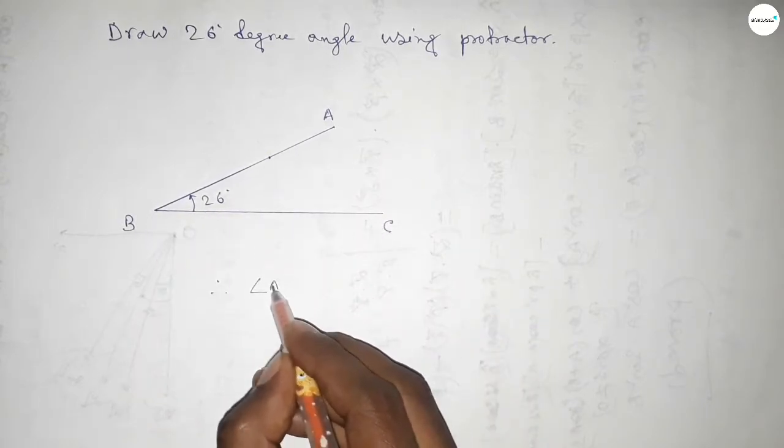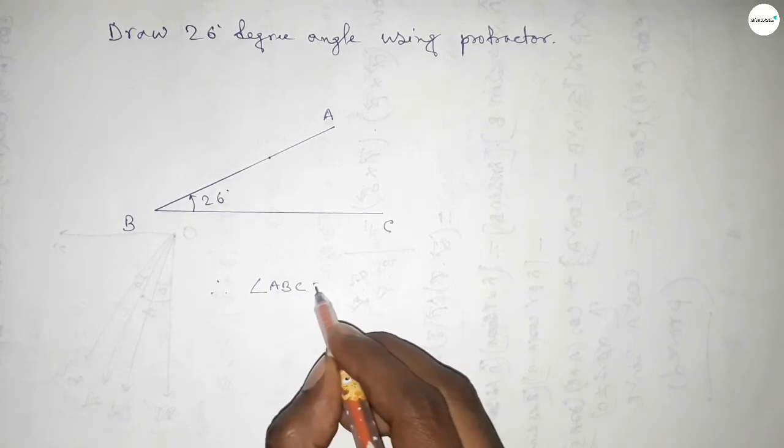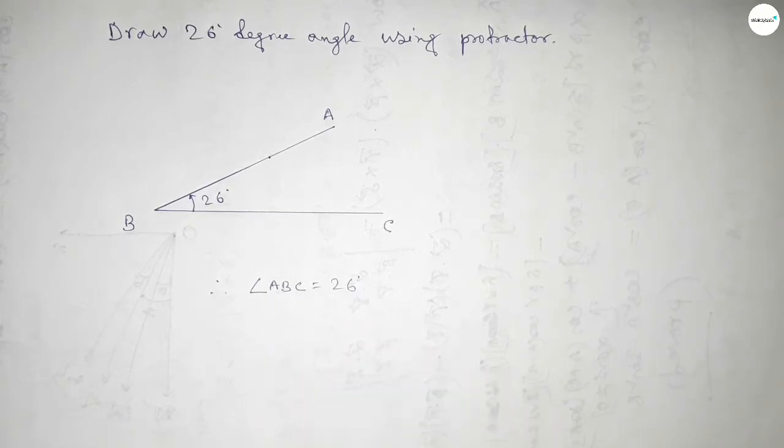So angle ABC equal to 26 degrees. That's all, thanks for watching. If this video is helpful to you then please share it with your friend. Thanks for watching.